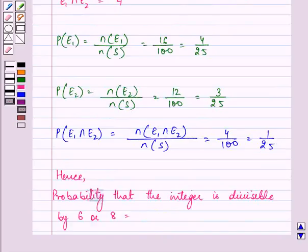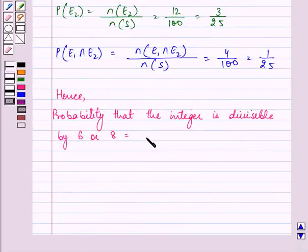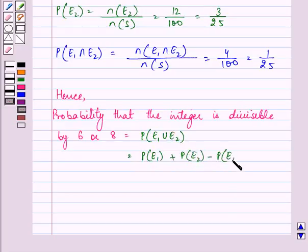Hence, probability that the integer is divisible by 6 or 8 is equal to probability of E1 union E2 that is probability of E1 plus probability of E2 minus probability of E1 intersection E2.